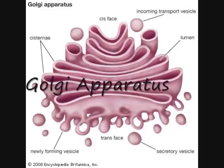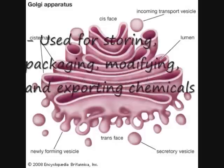The Golgi apparatus are sac-like membranes used for storing, packaging, modifying, and exporting chemicals.